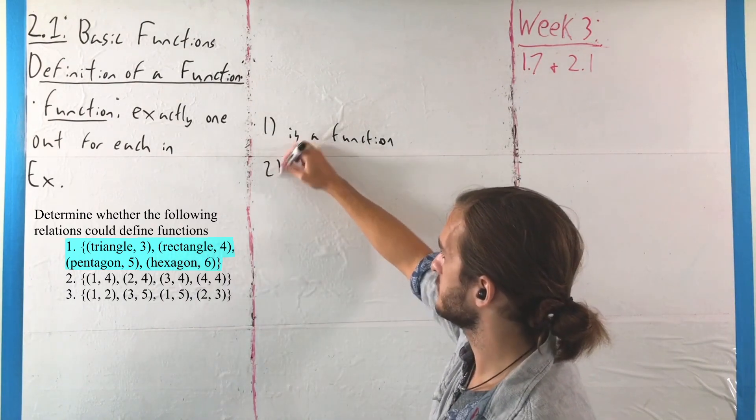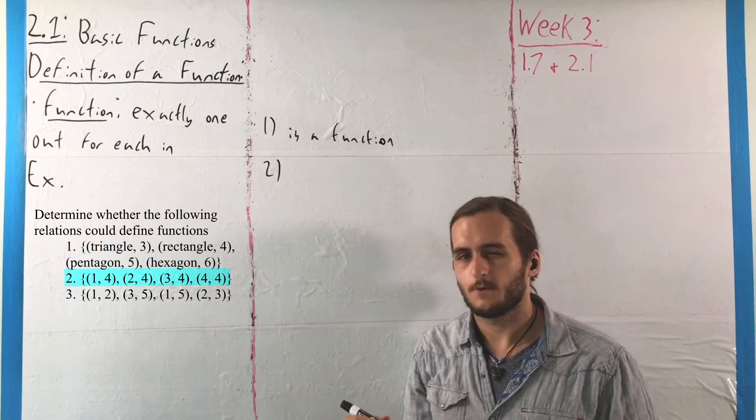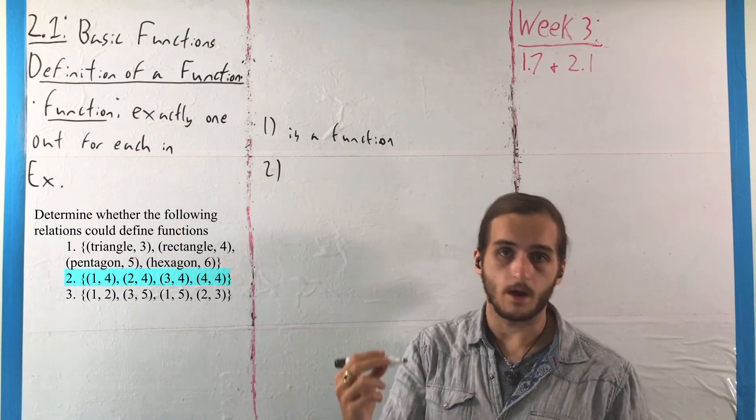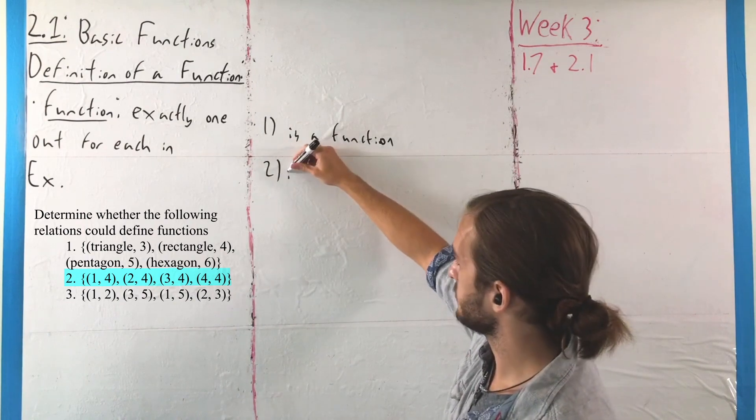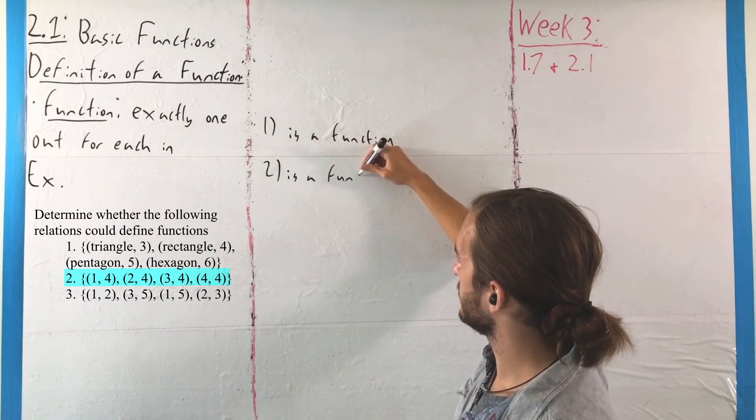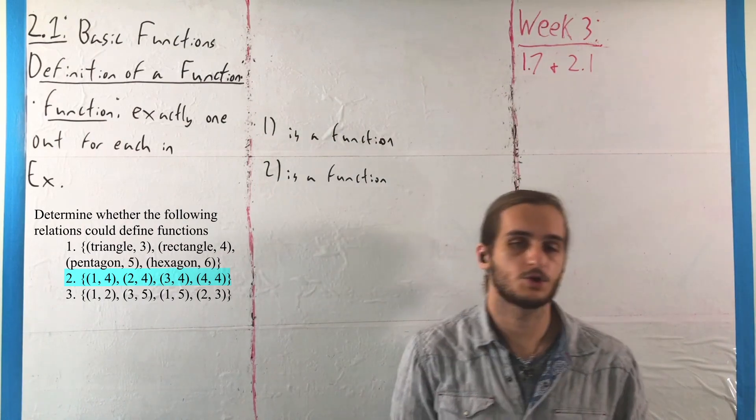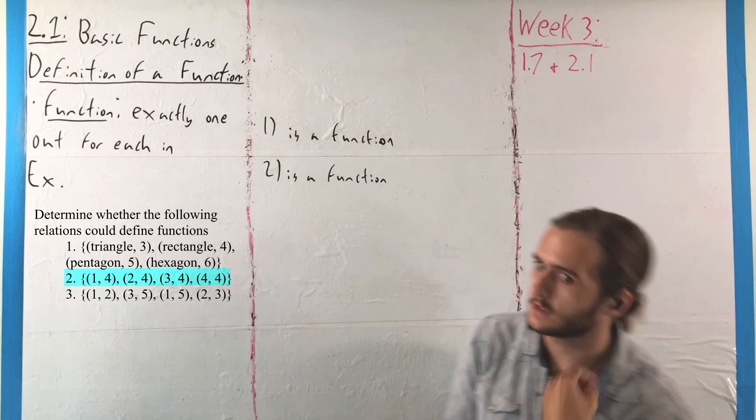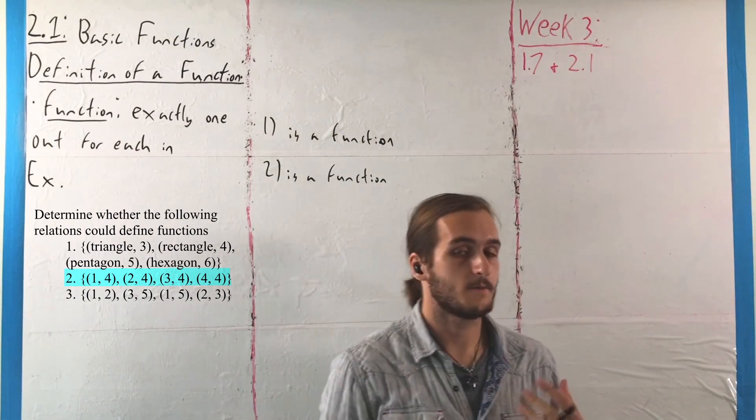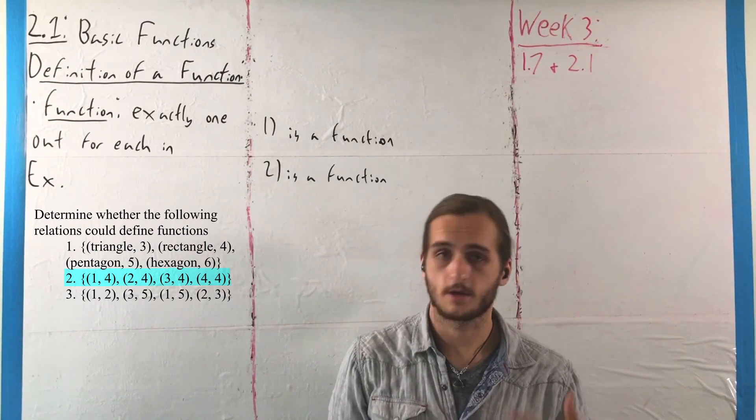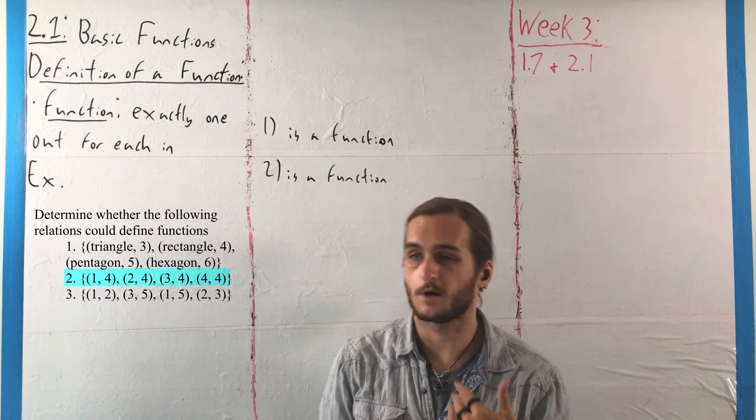In the second case, even though our outputs aren't very interesting, each input only gives one. So, that would still be a function. And in particular, if we want to think of what kind of function that might be, that's a pretty constant function, which might come from a constant equation. I'm getting a little bit ahead of myself, but hopefully you have some sense of what that should look and act like when we get a bit more numerical.